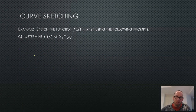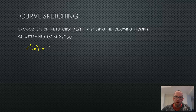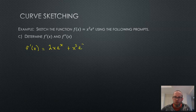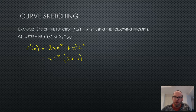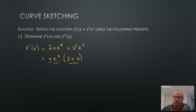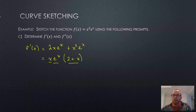To find max, mins, and inflection points, we need the derivatives. For f prime of x, we're using the product rule: differentiate the first, leave the second, plus leave the first, differentiate the second which is e to the x. This is easy to factor — we have an x and an e to the x from each term — leaving x times e to the x times (2 plus x). Nothing makes e to the power of x equal to 0, so the critical points come from x equals 0 and 2 plus x equals 0.